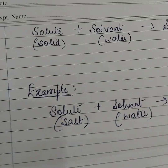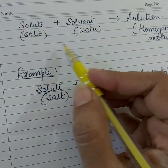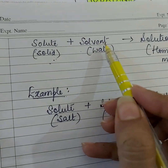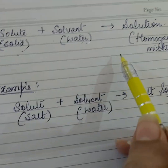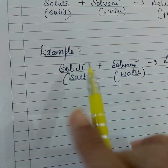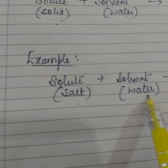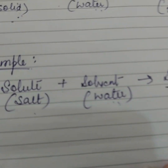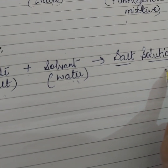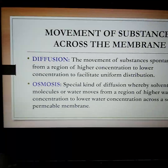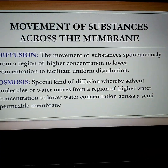We need to understand what a solution is and how it is made. A solution always contains a solute — a solid — completely dissolved in a solvent, which is water, to form a homogeneous mixture. For example, to make a salt solution, I take salt and dissolve it in water until the salt completely dissolves such that I cannot segregate the salt from the water. Substances move across the membrane either through diffusion or osmosis.